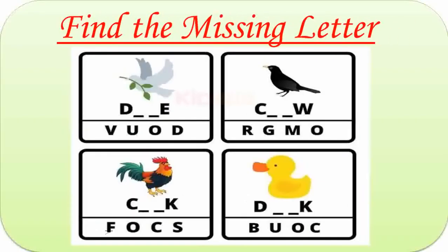Here are some words. First one is Dove. D-O-V-E. So the missing letters are V and O. Second name is Crow. Missing letters are R and O. The word becomes C-R-O-W. Crow. In the third one, missing letters are O and C. That is C-O-C-K. The fourth one is Duck. So the missing letters are U and C. D-U-C-K. Duck.